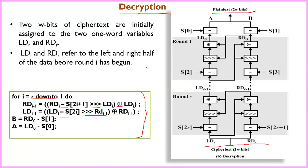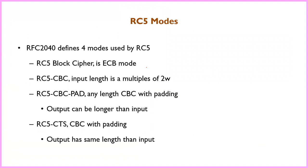This is the working nature of the RC5 algorithm. The next topic is RC5 modes. There are four modes defined: RC5 block cipher (ECB mode), RC5-CBC, RC5-CBC-Pad, and RC5-CTS. Block cipher is ECB mode. CBC requires input length as a multiple of two words. CBC-Pad allows any length with padding. CTS (Ciphertext Stealing) requires different length handling. These are the four modes applied in RC5.